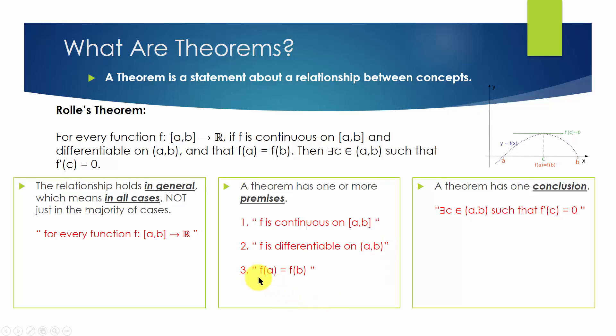The third premise is that the value of f at point a equals its value at point b. So if any or more of these conditions are not met, the theorem fails.